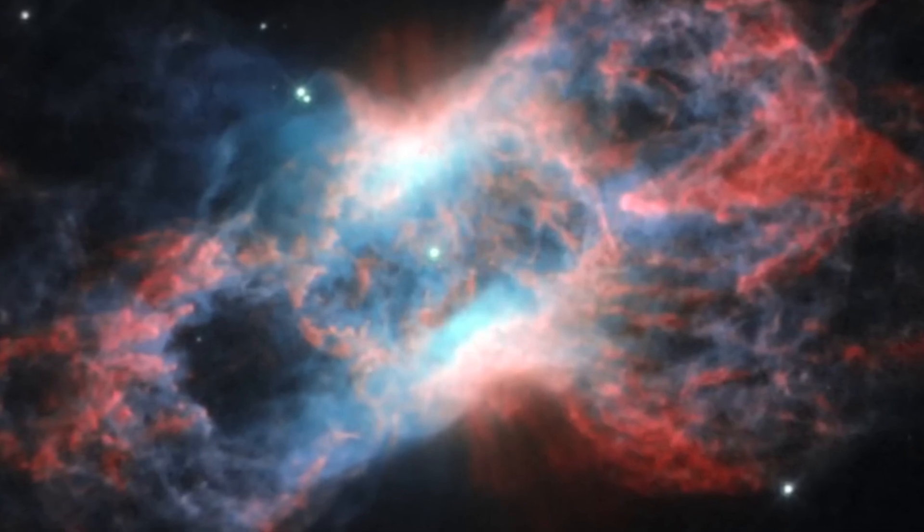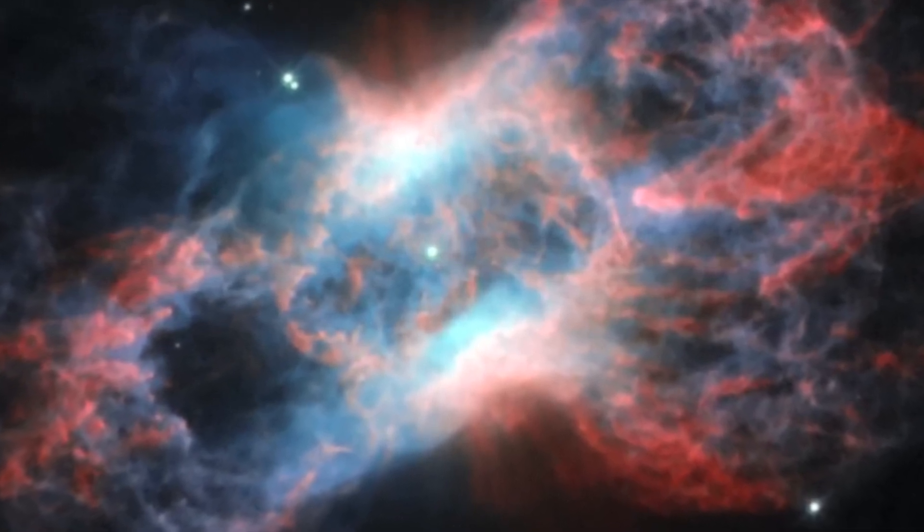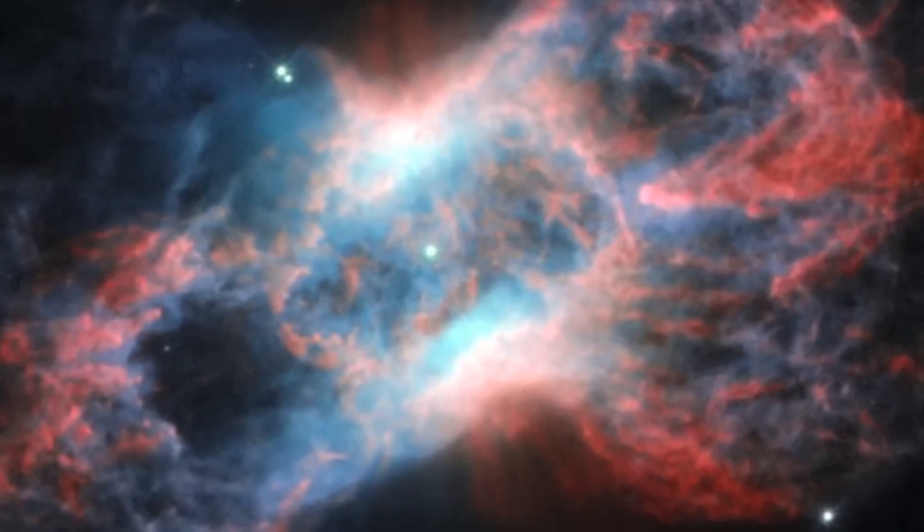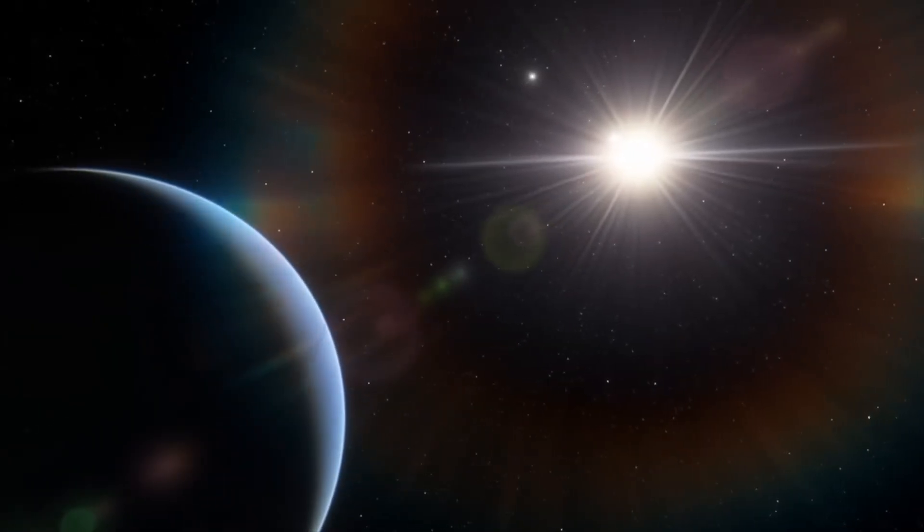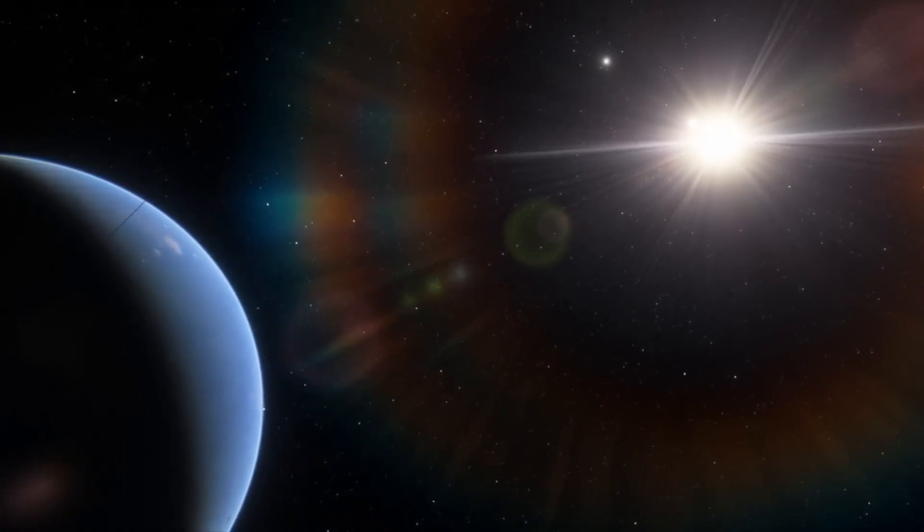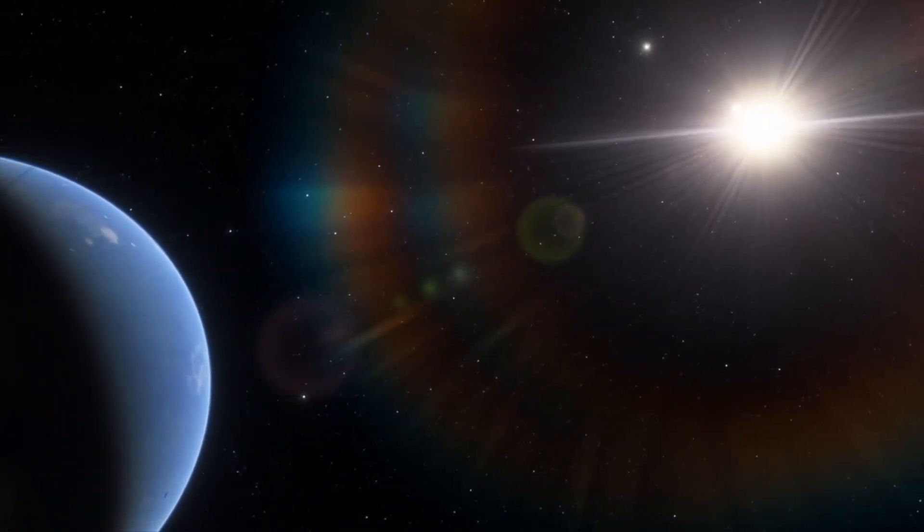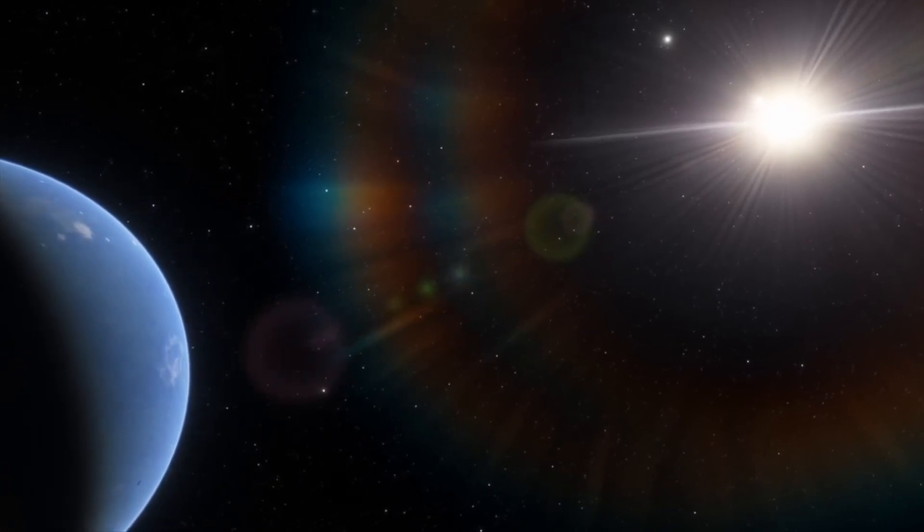This high-energy radiation has the ability to catalyze the removal of oxygen from the ozone layer that protects the Earth. Without the ozone layer, life on Earth's surface would be exposed to the full force of the sun's ultraviolet radiation, which could result in an extinction event in the first few seconds of a supernova.